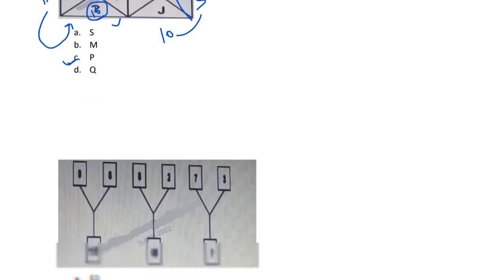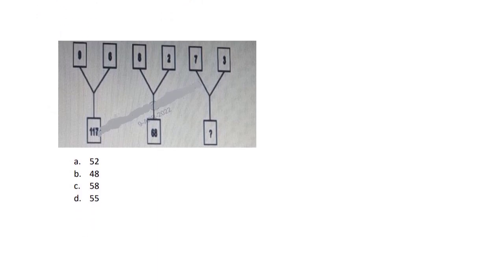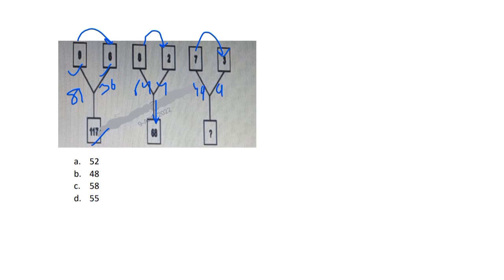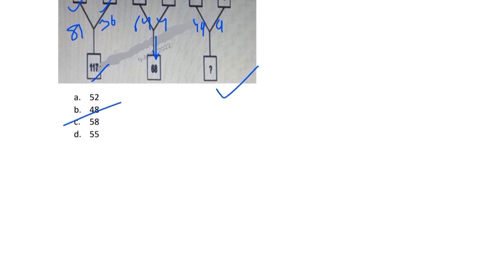The next question is also really easy. You can see 9 and 6 — when you multiply them you get 54, but that is not among the options. So if you cannot multiply directly, square them instead. 9 squared is 81 and 6 squared is 36, so 36 plus 81 gives 117. Then 8 squared is 64 and 2 squared is 4, giving 68. Then 7 squared is 49 and 3 squared is 9, giving 58. So the answer is option C — 58.